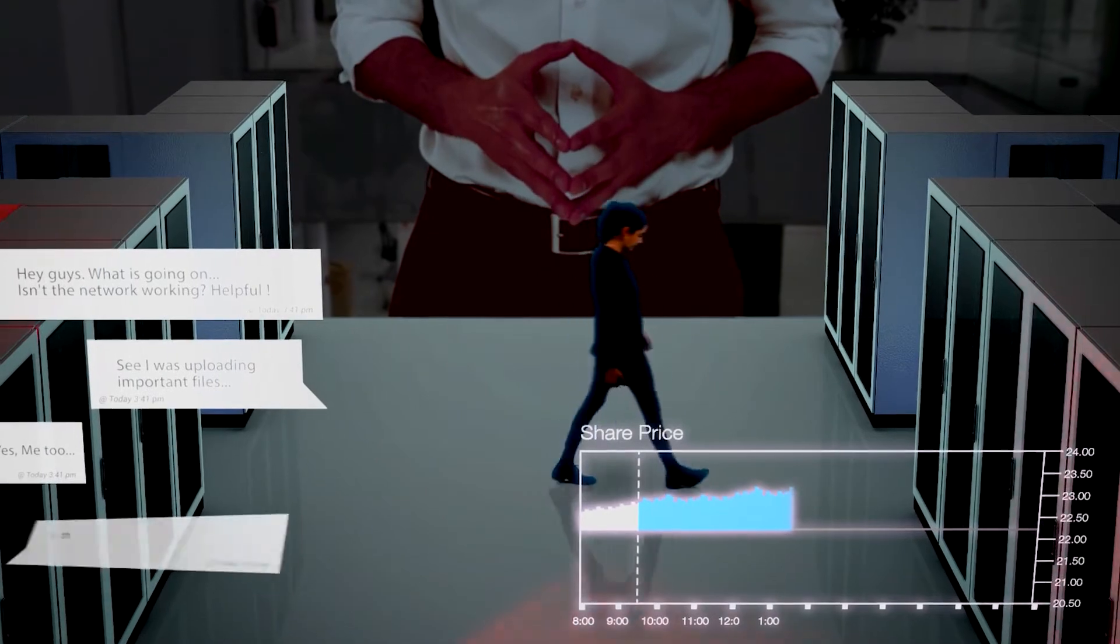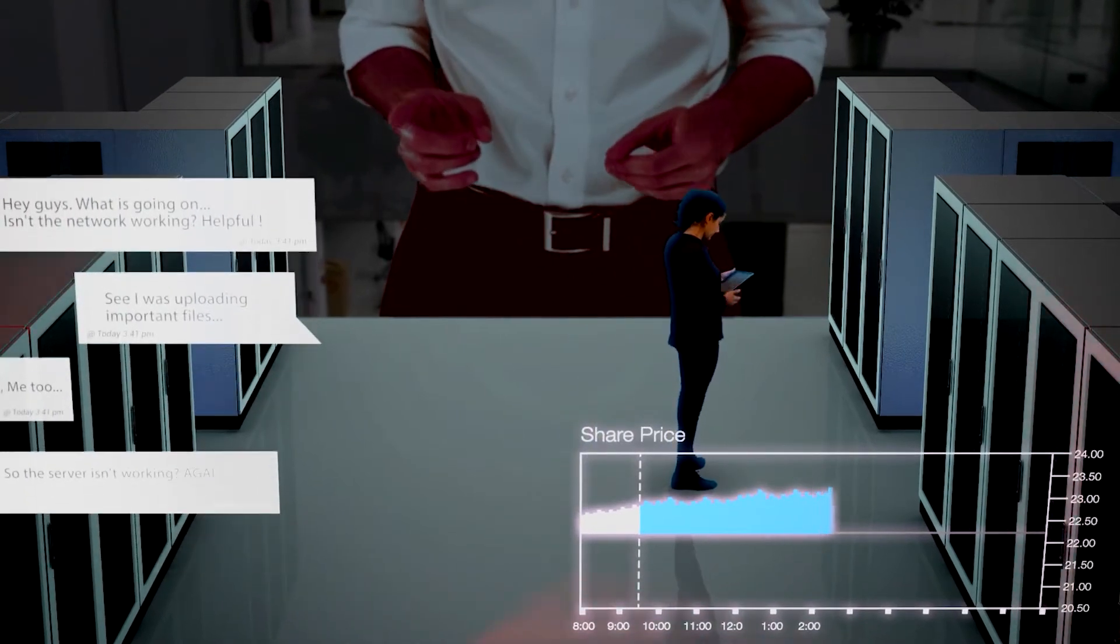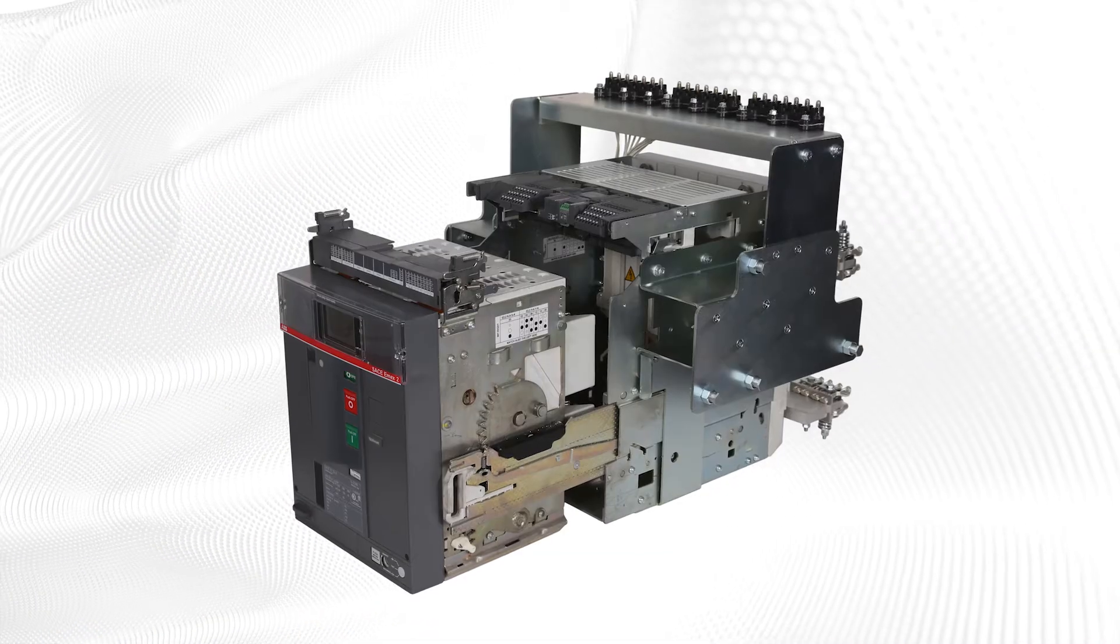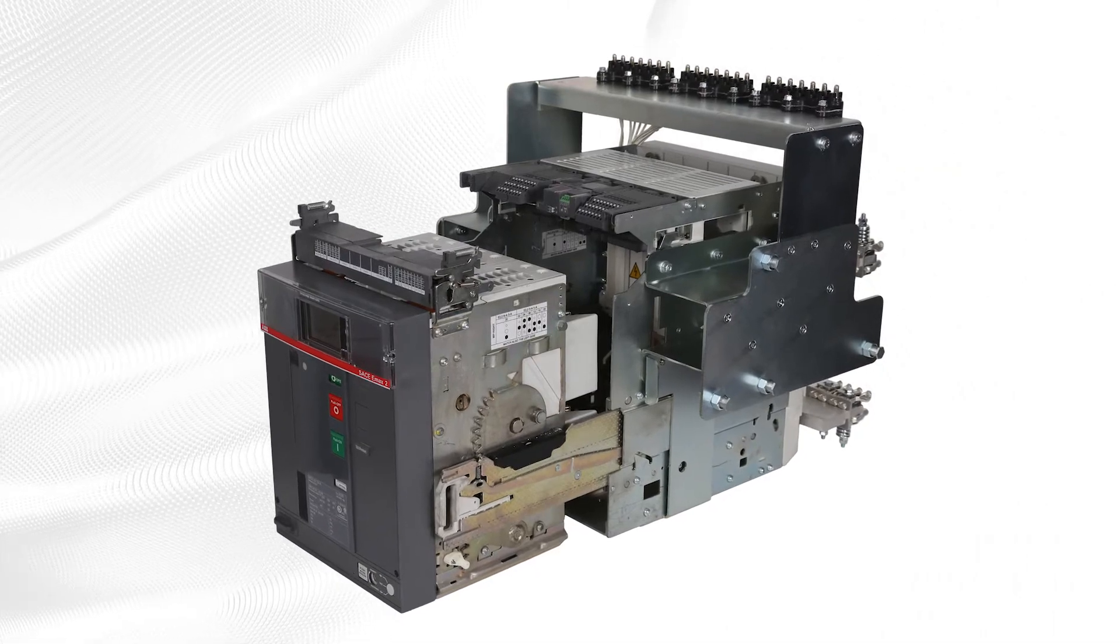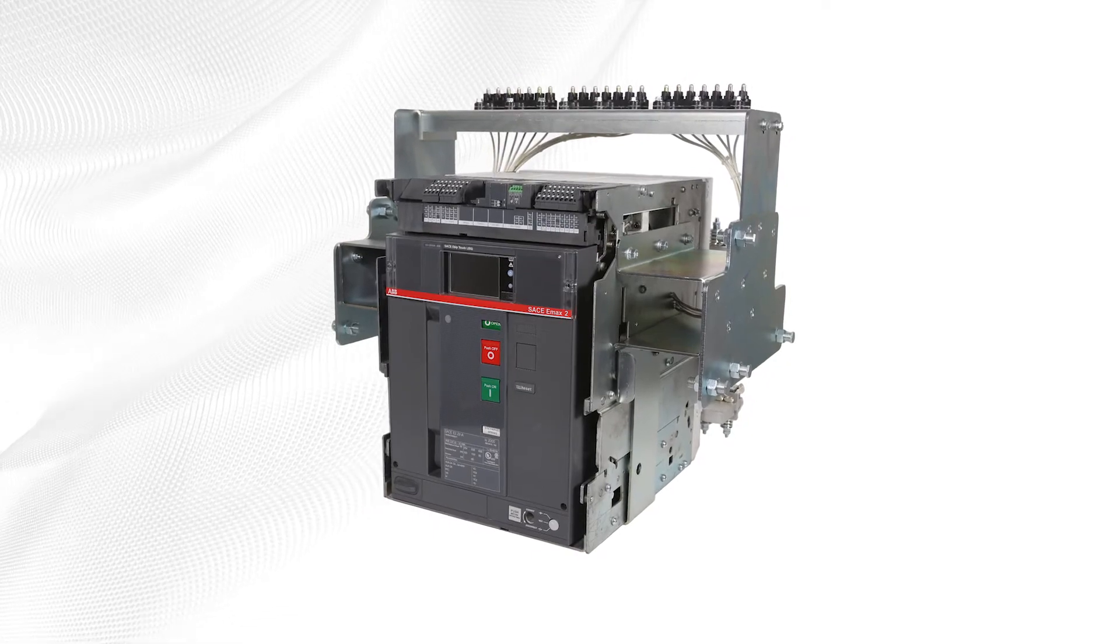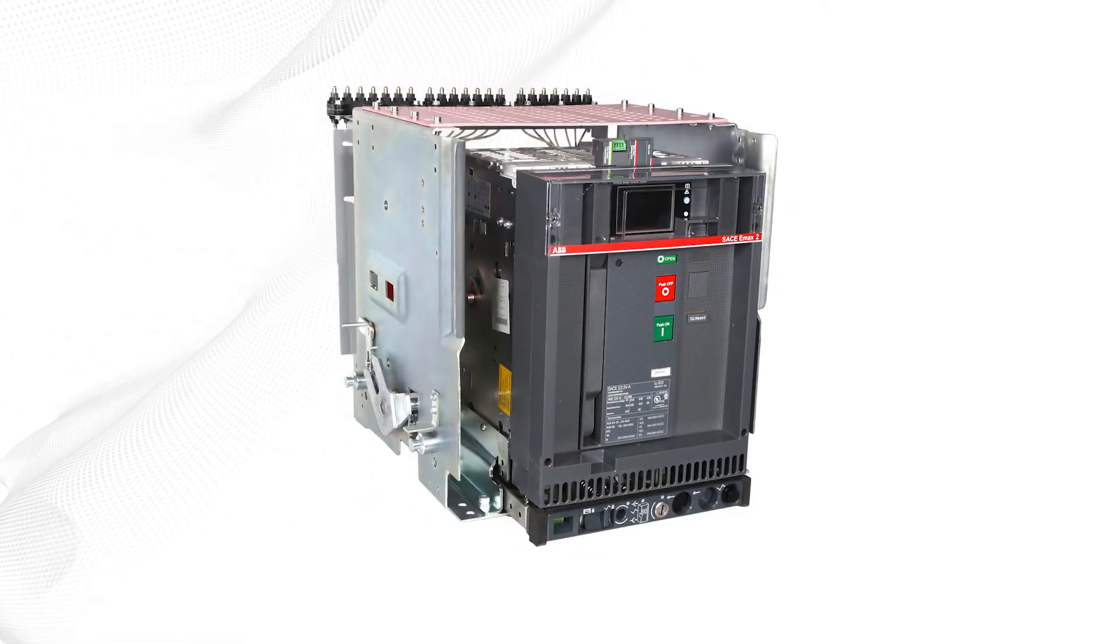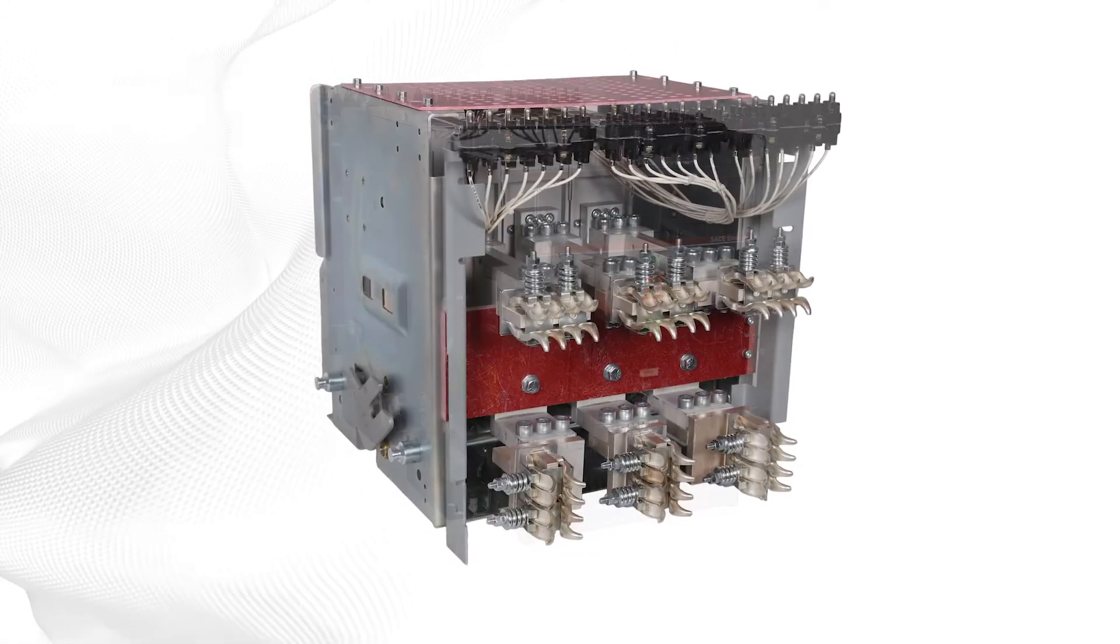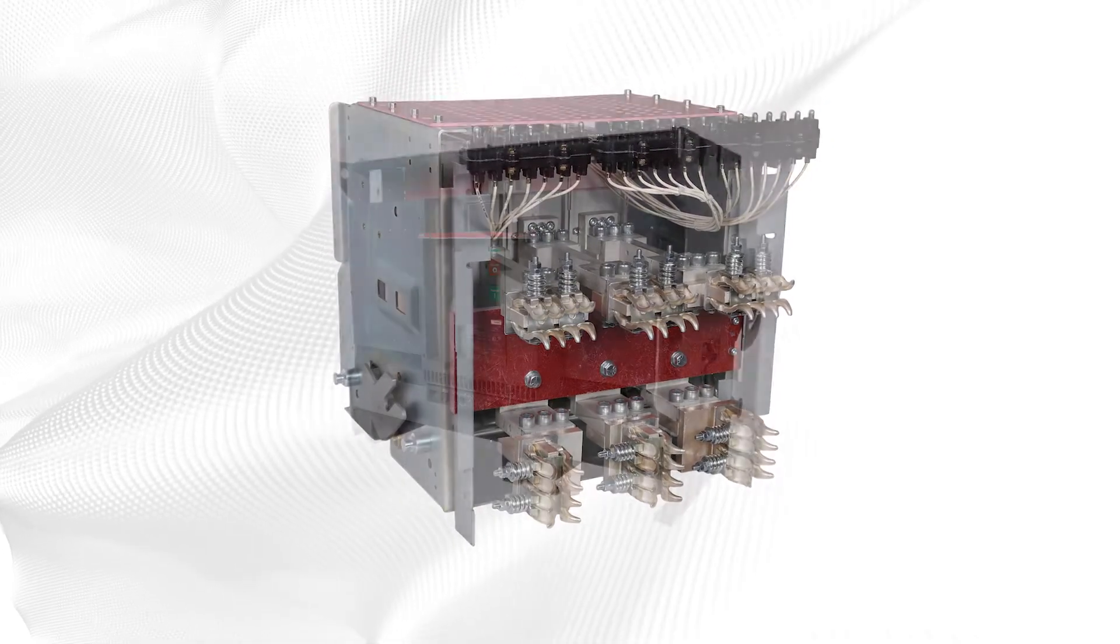Stay ahead of costly failures with timely upgrades. E-MAX 2 retrofill is compatible with shutter racking mechanisms in existing cubicles and interfaces with the original secondary disconnects, position switches and neutral disconnect. This makes the replacement process fast and easy, minimizing costly downtime.